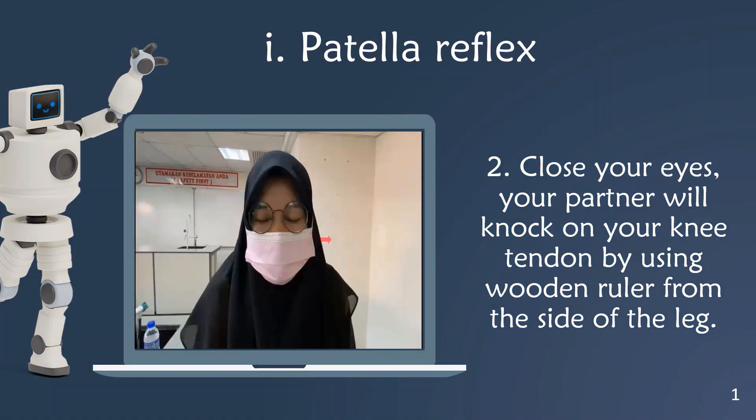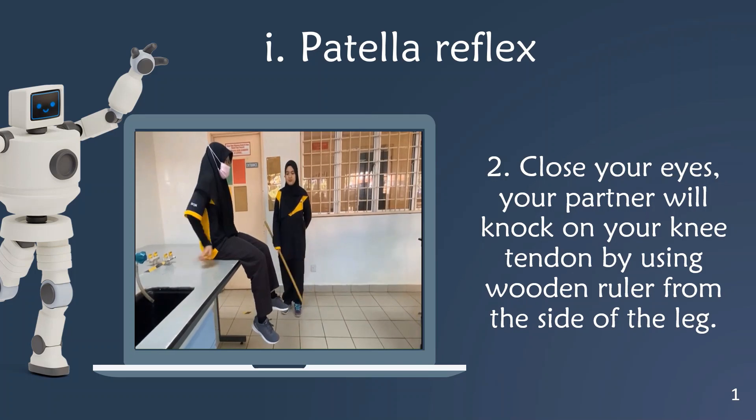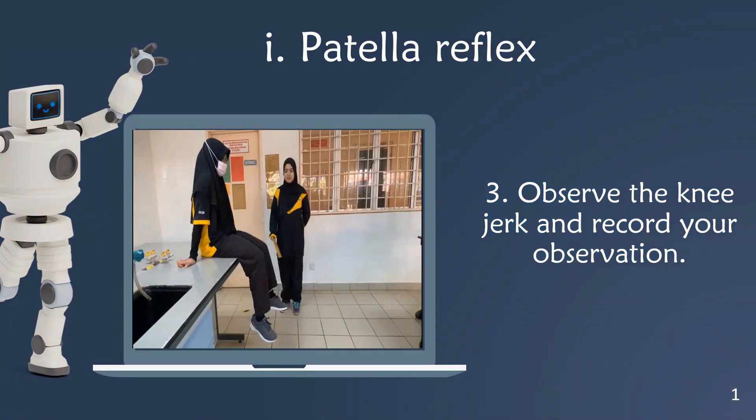Then close your eyes. Your partner will knock on your knee tendon using a wooden ruler from the side of the lid. You have to observe the knee jerk and record your observation in table 12.2.